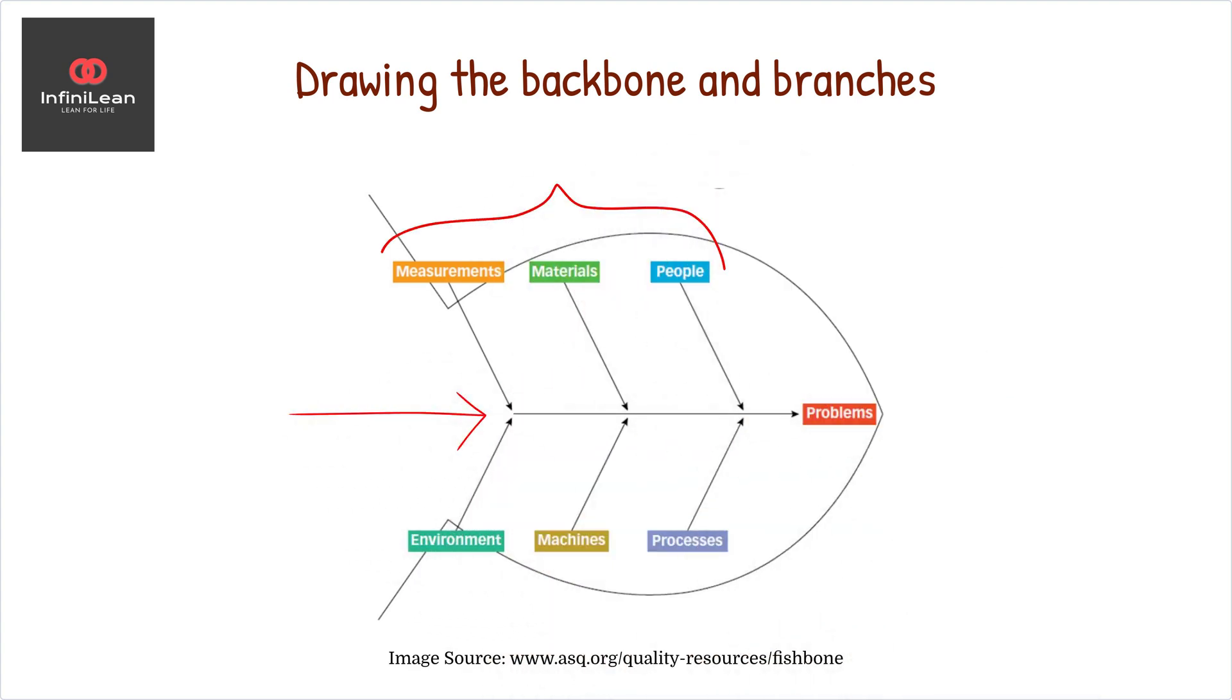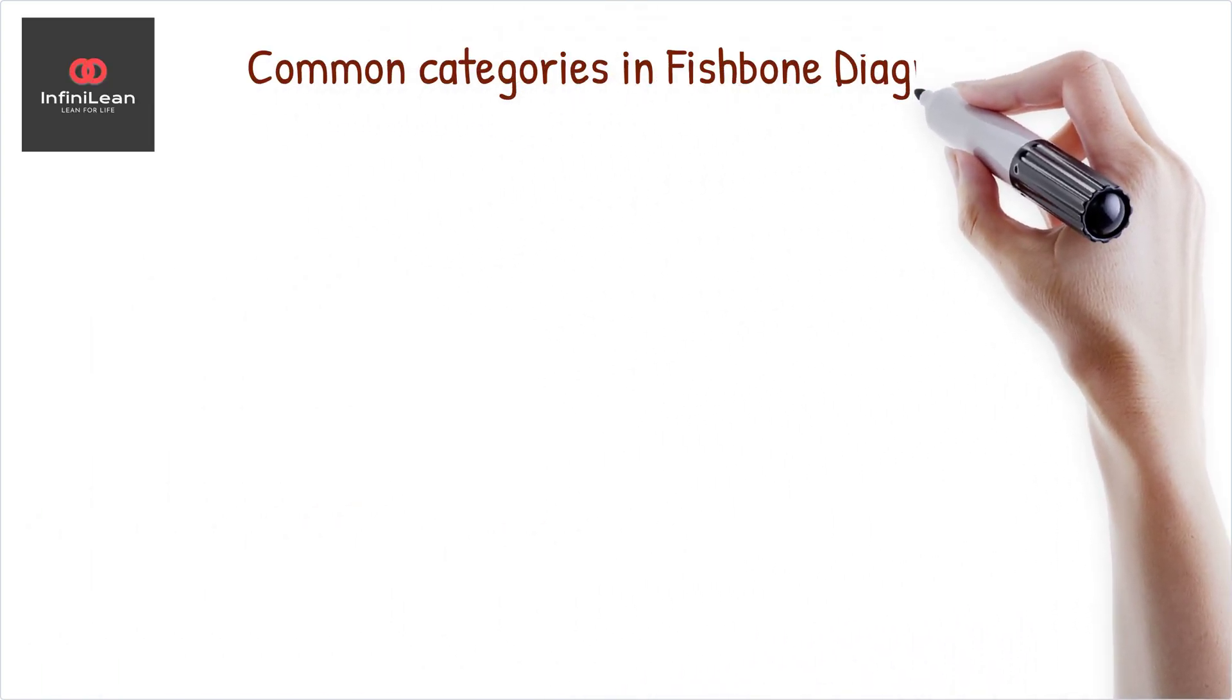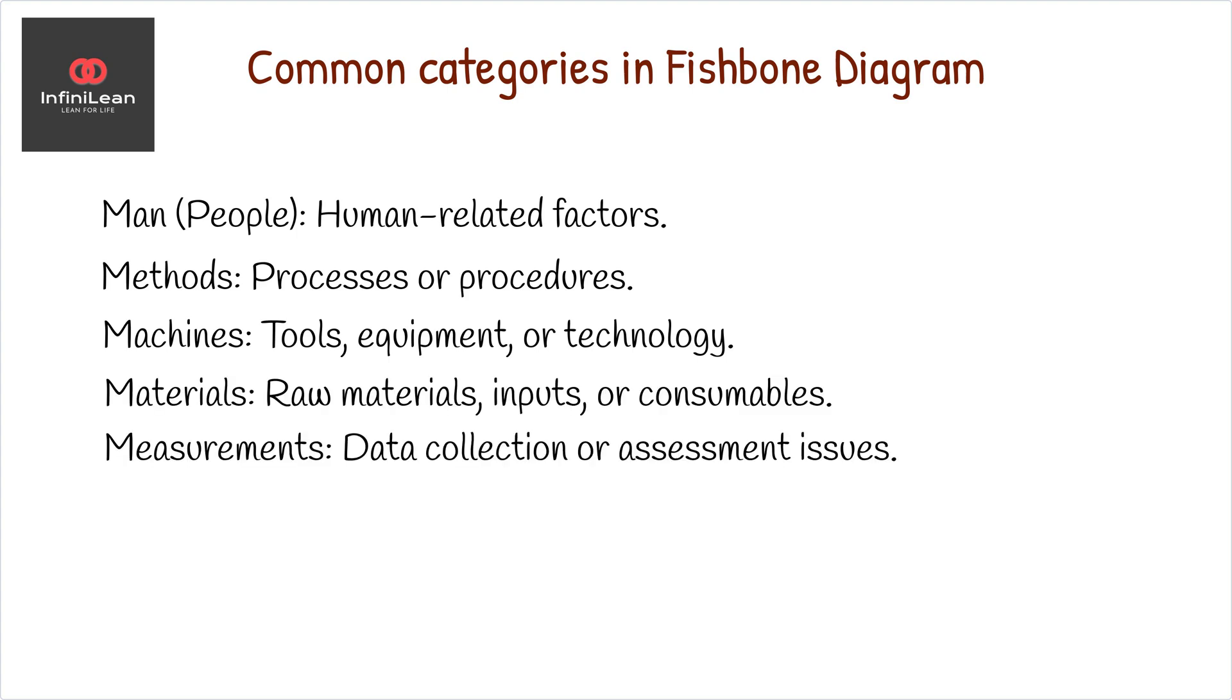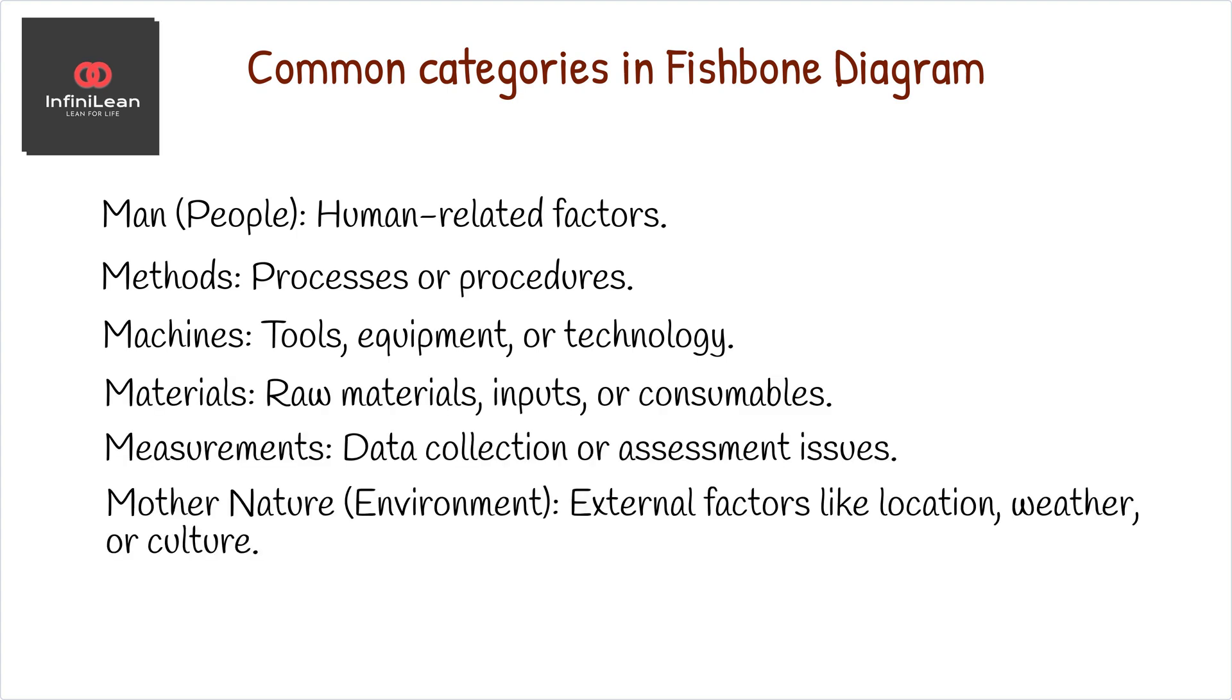Each of these bones represents a category of potential causes. Common categories include man or people, methods, machines, materials, measurements, and mother nature or environment, the 6Ms. These can be customized based on the problem you're tackling.